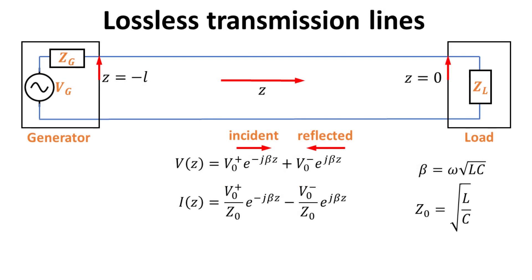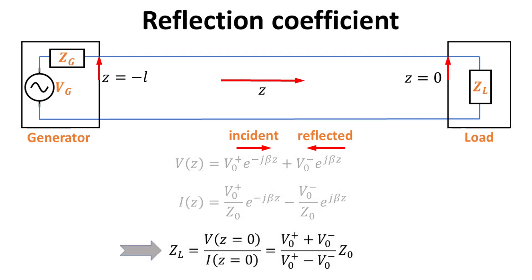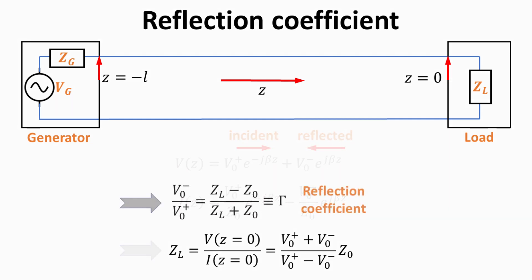We define the coordinate Z such that the generator and load locations are defined by Z equals minus L and zero respectively. We recall that the first term in the voltage expression is the incident wave, while the second term is the reflected wave. At the load location, we can relate the load impedance Z_L in terms of its voltage and current at that location. With some algebraic manipulation, we obtain an expression for the ratio of V0-minus to V0-plus in terms of Z_L and Z0. We call this ratio the reflection coefficient, since it expresses the fraction of reflected amplitude to incident amplitude.